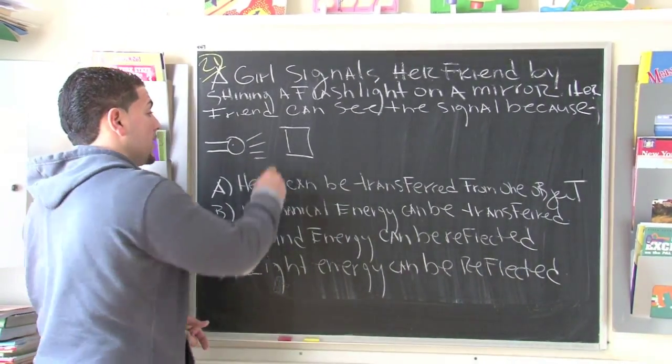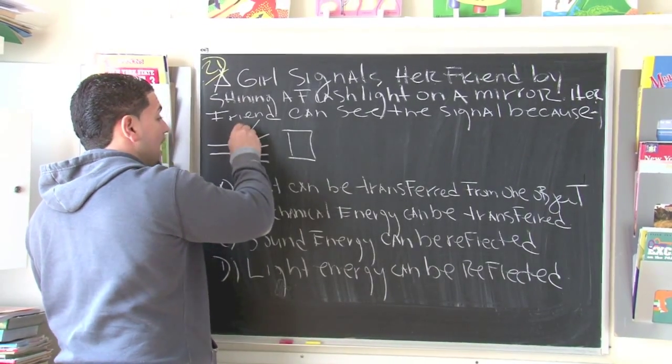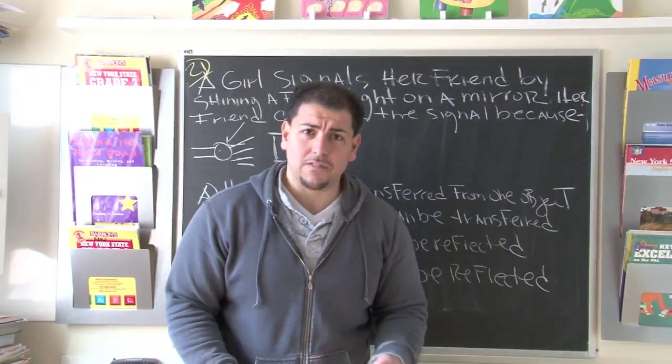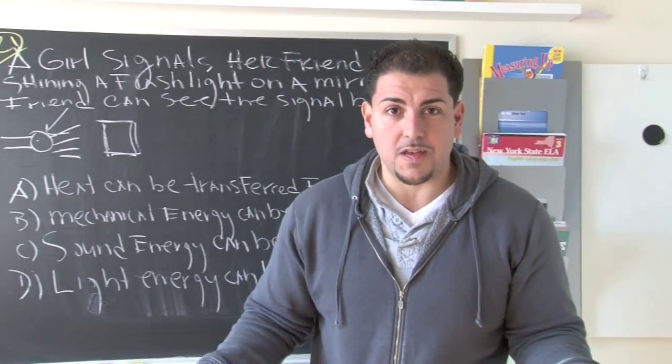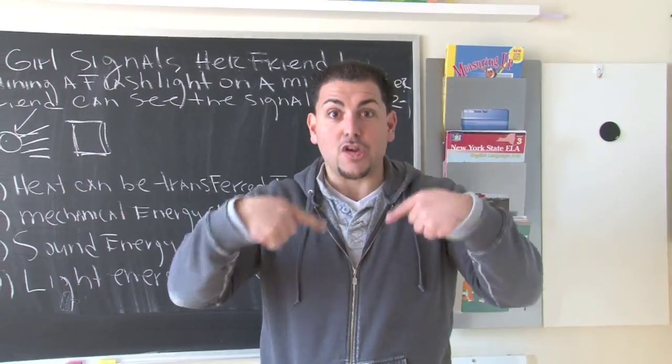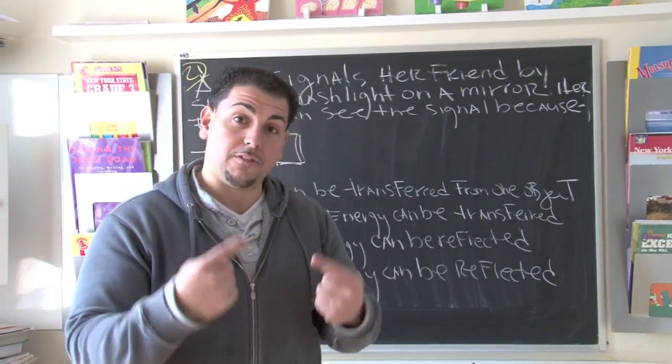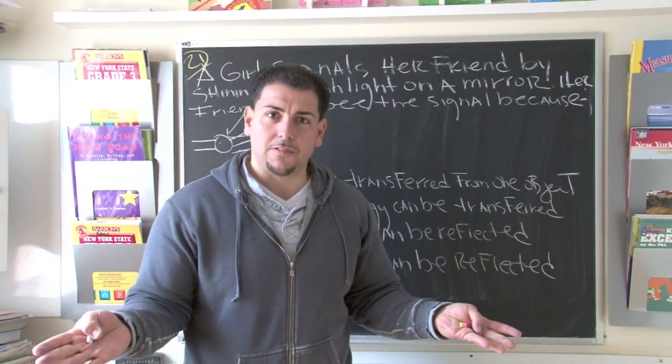Key things you want to remember: the light is coming from the flashlight, and here's the mirror. Now, what do we know about the mirror? Have you ever looked in a mirror? What do you see? You see yourself, your reflection. Well, think about that property. If a mirror has the ability to reflect you, well, maybe it can reflect light too.